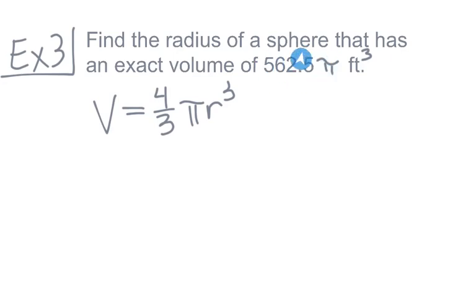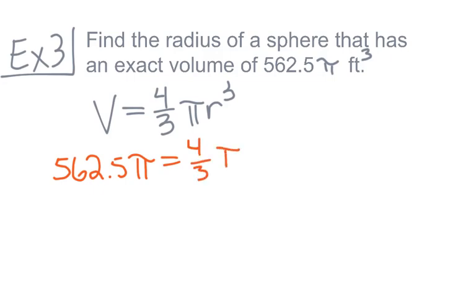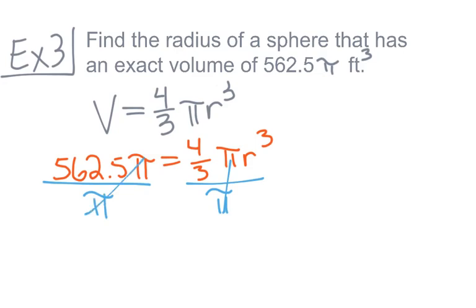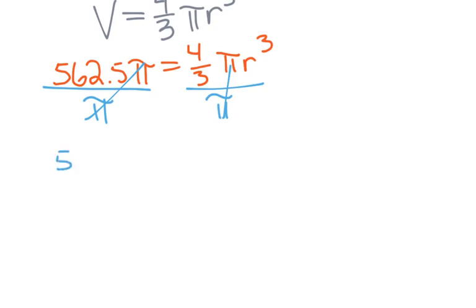We substitute our volume value in for V, giving us 562.5 pi equals 4 thirds pi r cubed. The goal is to get radius cubed by itself, so we need to get rid of the 4 thirds and the pi. Let's get rid of pi first: dividing both sides by pi causes the pi's to cancel on both sides. We're left with 562.5 equals 4 thirds r cubed.